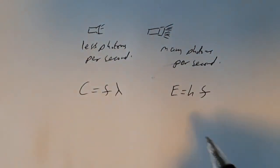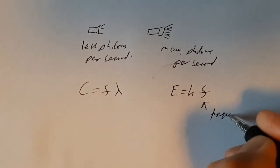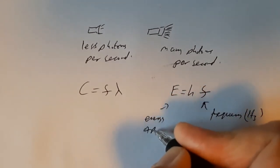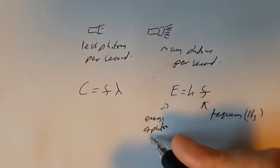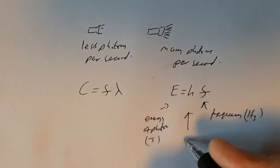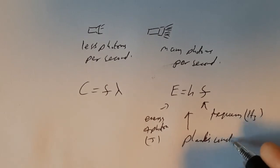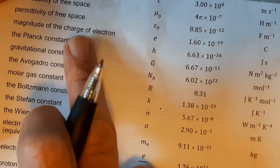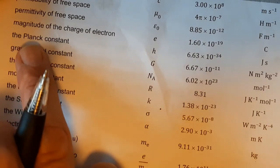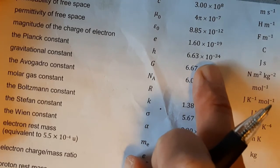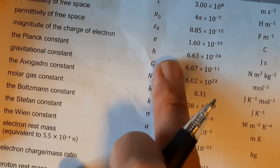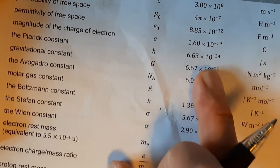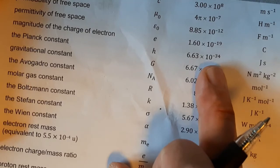That gives us a constant you've probably not come across before. F is frequency in Hertz, E is the energy of a photon in joules, and h is called Planck's constant — spelled P-L-A-N-C-K. It's an important but very small number: 6.63 × 10⁻³⁴ joule seconds. You can have the data sheet in the exam, so you don't need to memorise that number — you just need to know where to find it.